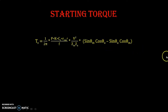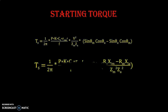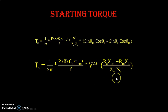Introducing the values of sine theta_m, cosine theta_m, sine theta_a, and cosine theta_a in terms of resistance and impedance, the final equation for starting torque becomes: 1 over 2pi, multiplied by p, multiplied by k, multiplied by cr, multiplied by Rrm dash, divided by f, multiplied by V squared, multiplied by the quantity Ra times Xlm minus Rm times Xla, all divided by Zm squared times Za squared.